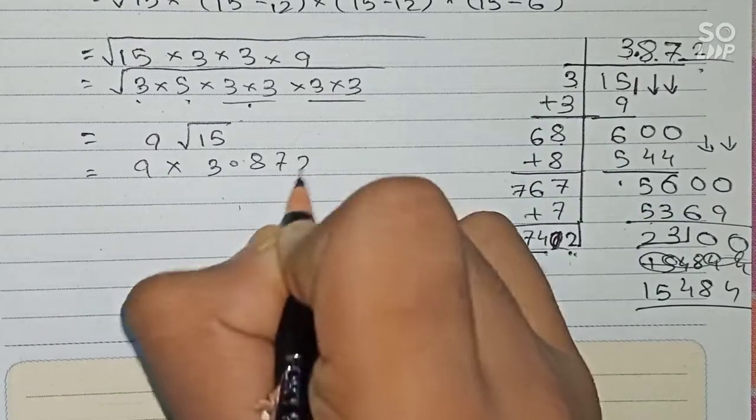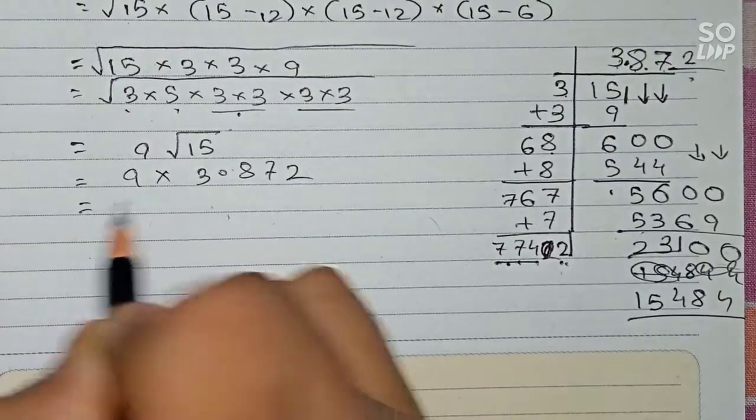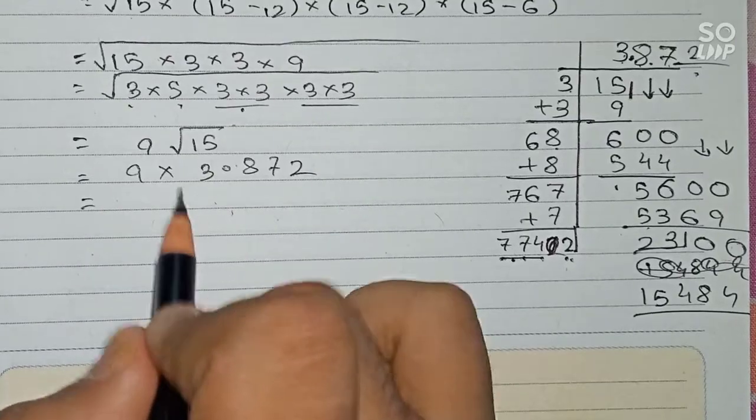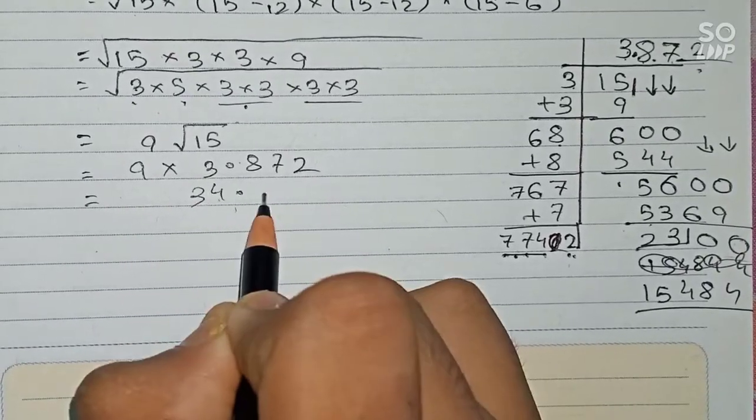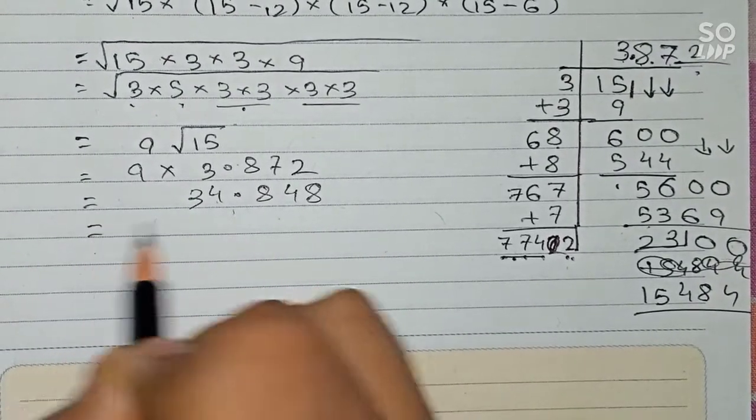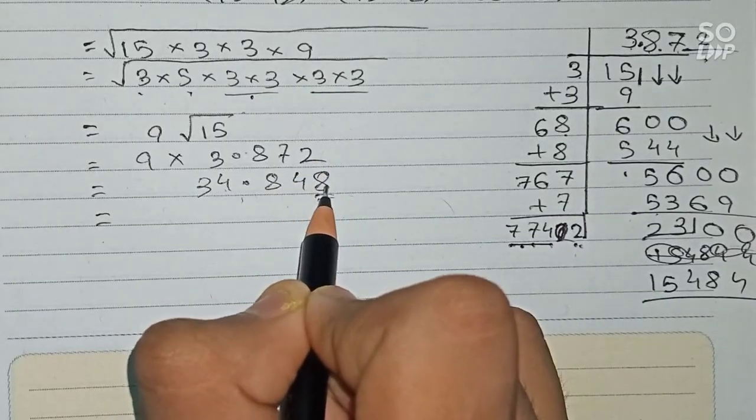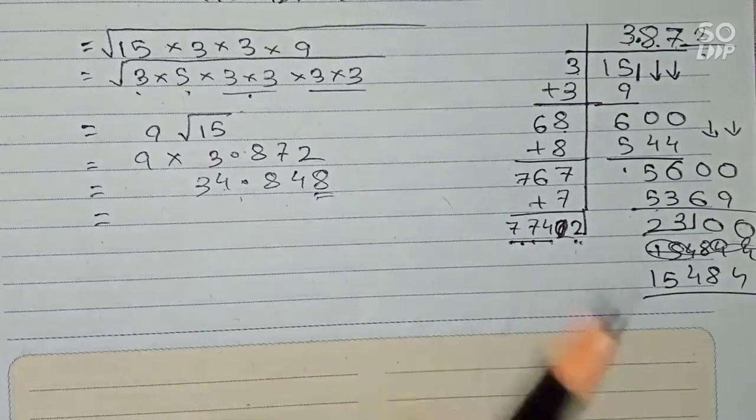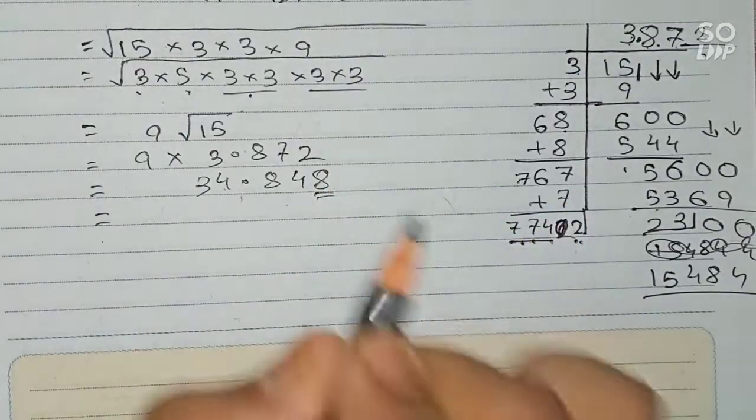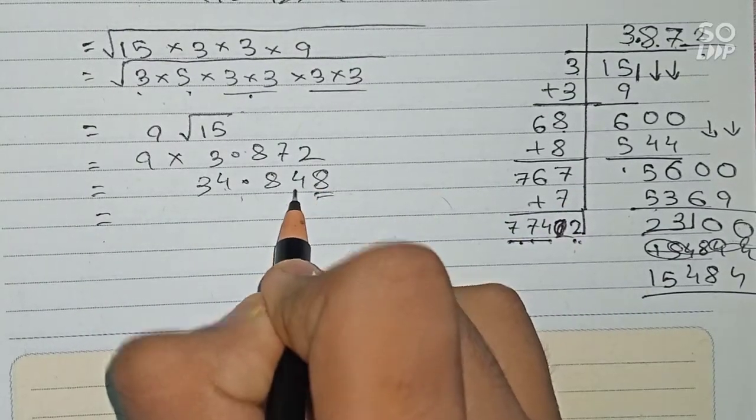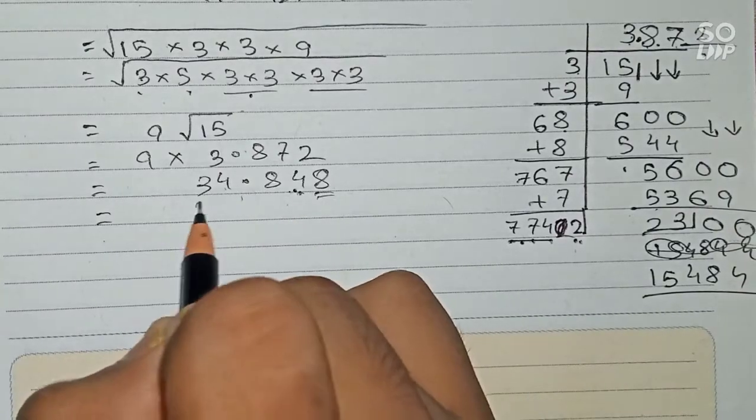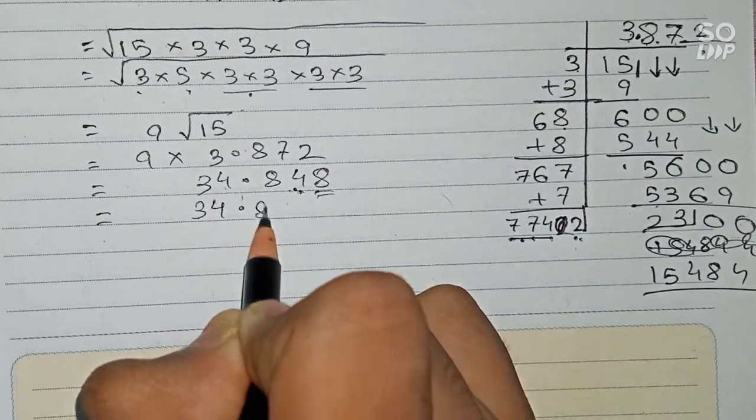So 9 times 3.872 will become 34.848. As 8 is there, it will go to 1 decimal place. As 8 is greater than 5, 1 will be added. So final answer is 34.85 centimeter square.